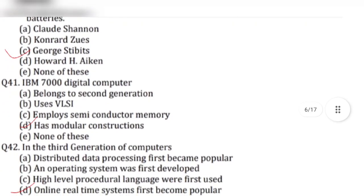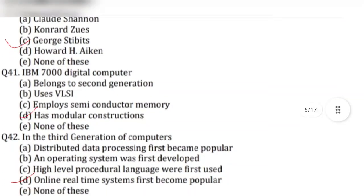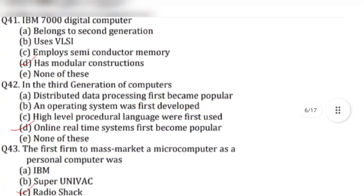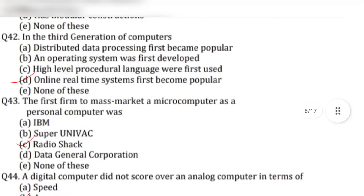Question 41: IBM 7000 digital computers — answer is option D, has modular construction. Question 42: In the third generation of computers, answer is option D, online real time systems first became popular.